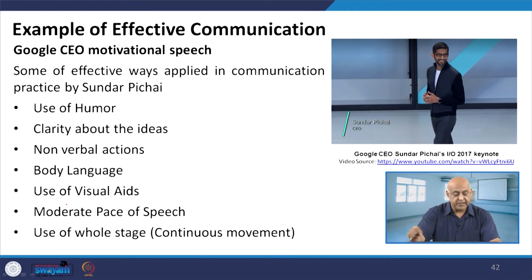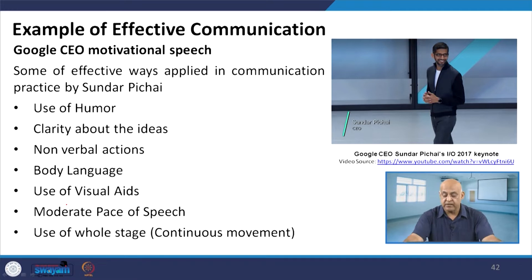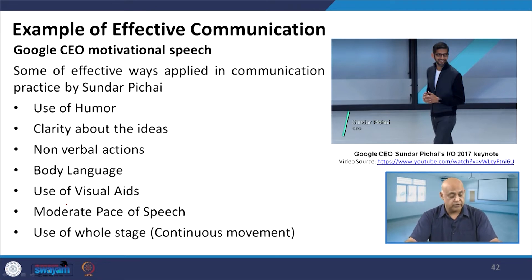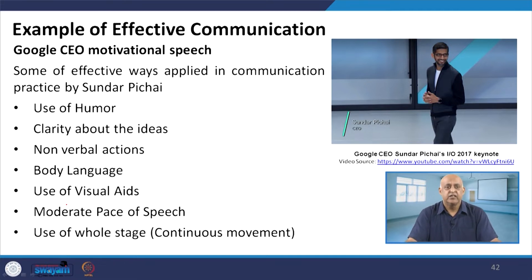When we talk about examples of effective communication, we look at Google CEO Sundar Pichai's 2017 keynote address. The salient features include use of humor, clarity about ideas, non-verbal actions affecting followers, body language, use of visual aids, moderate pace of speech, and continuous movement across the whole stage — all conveying that the leader is active and energetic.